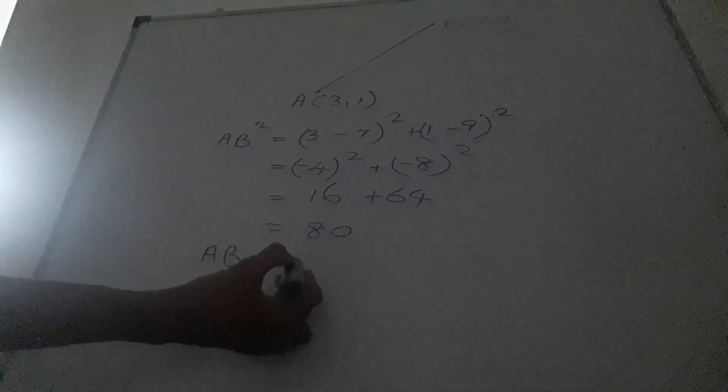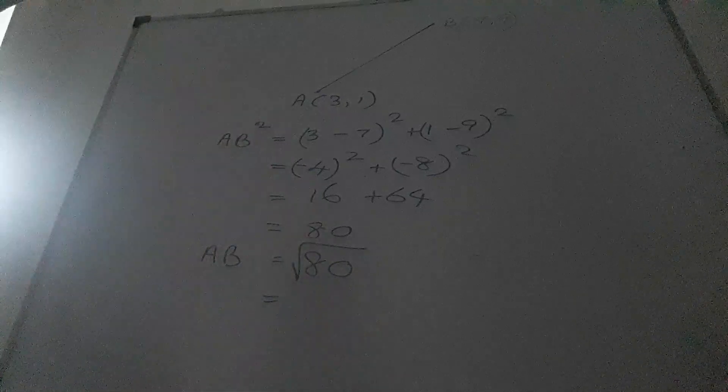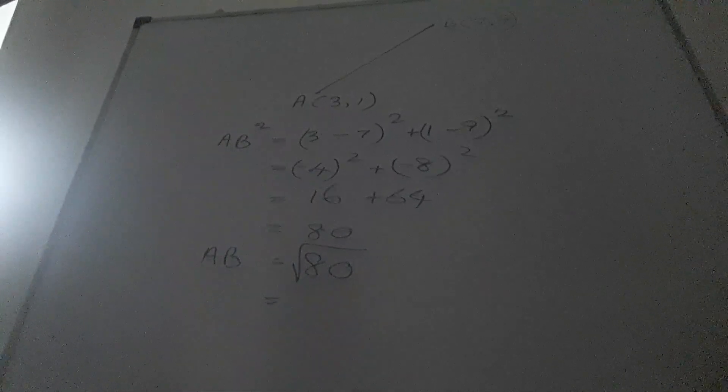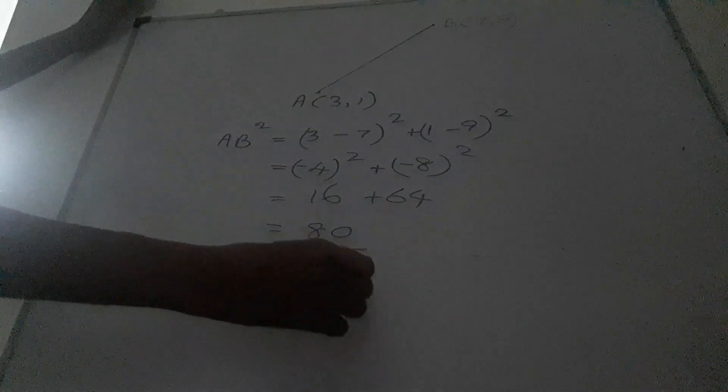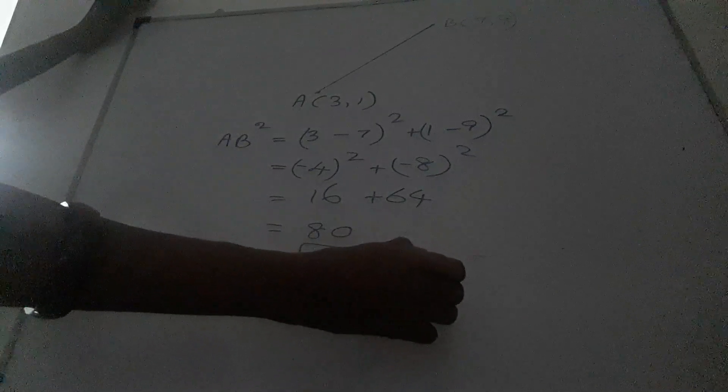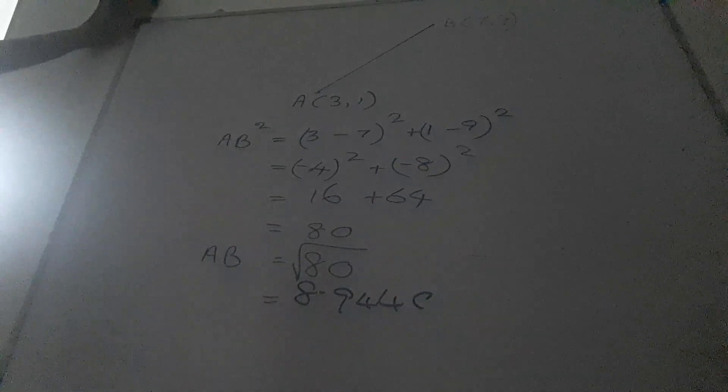AB is equal square root of 80. Answer is equal 8.944 units.